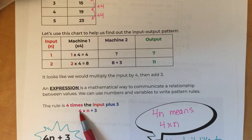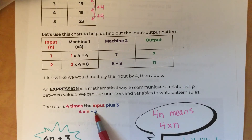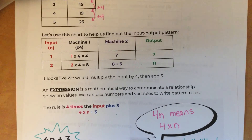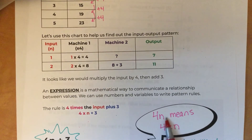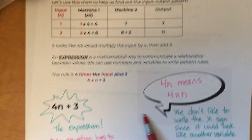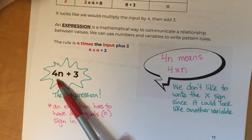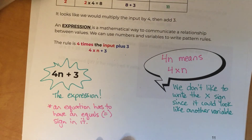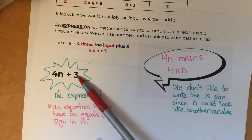4n means 4 times n — this is the best way to write it. Always put the number in front: write 4n, not n4. So the expression is 4n + 3. Note that this is not an equation — an equation needs an equal sign. This is called an expression.